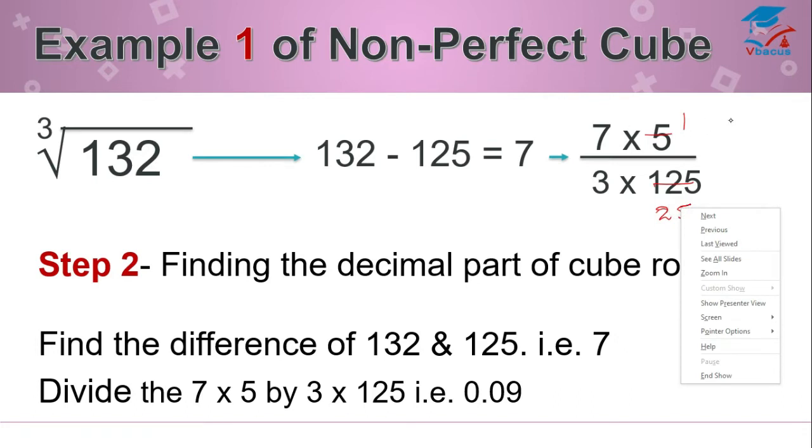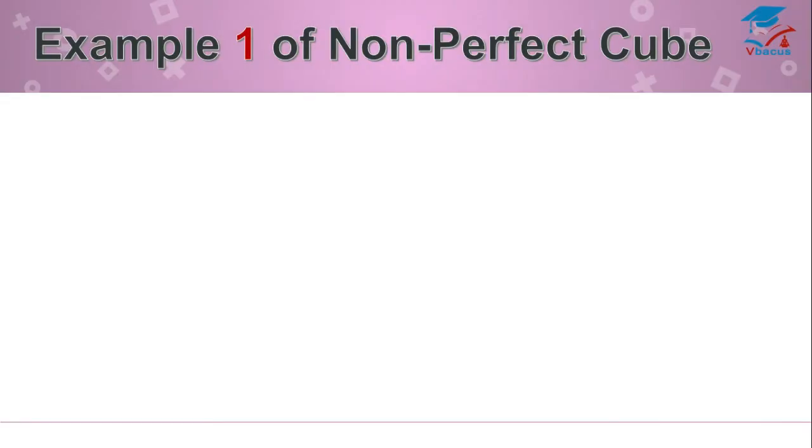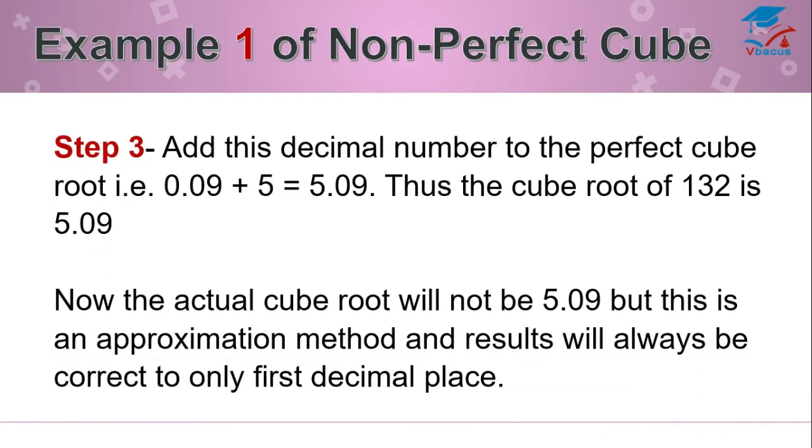Now 7 ones are 7, 3s are 75. If you divide 7 by 75, it will become 0.09. So your answer will become 5.09. Add the decimal number to the perfect cube root, that is 0.09 to 5. It will become 5.09. Thus, the cube root of 132 is 5.09.